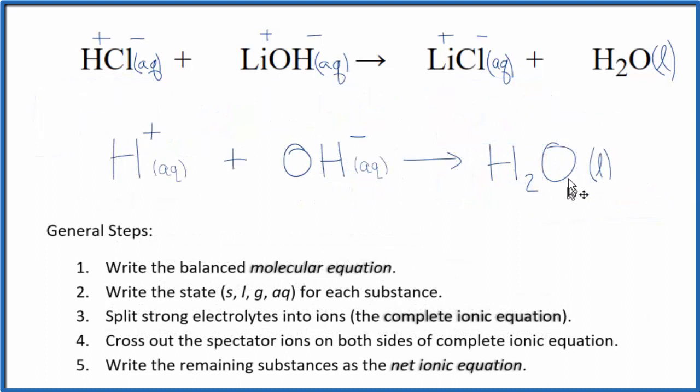So this is the balanced net ionic equation for hydrochloric acid plus lithium hydroxide. You'll notice the charge is conserved. We have a positive and a negative charge. Those cancel out. We have a neutral product here in our reaction. And mass is conserved as well.